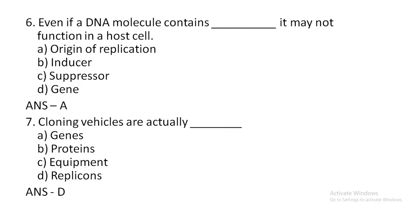Cloning vehicles are actually a dash. The options are: genes, alternative proteins, alternative equipment, alternative replicants. Option D, another character is replicants.